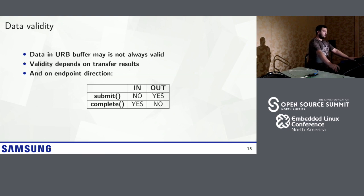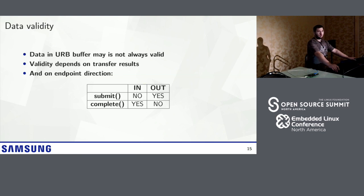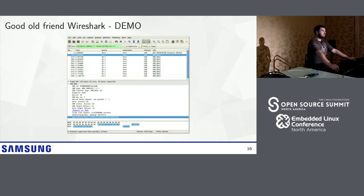Depending on the direction of the URB, you need to look in different places for the data. For OUT transfers, where the driver is sending data to the device, look at URB submit events. For IN transfers, where you want to know the device's response, look for the completion event. Fortunately, you don't need to use a binary or text interface because Wireshark supports USB monitor — just load the kernel module, open Wireshark, and see all the USB traffic happening on the bus.